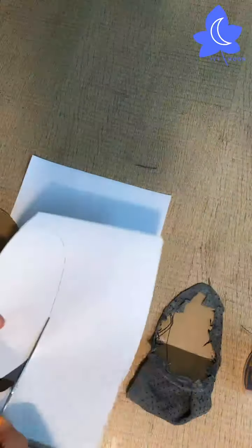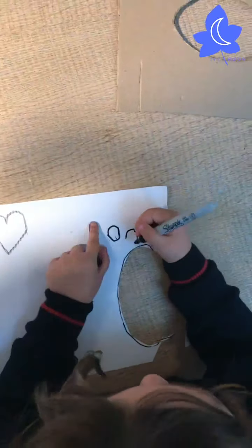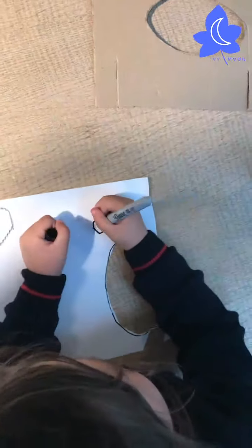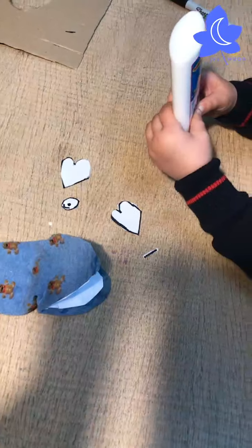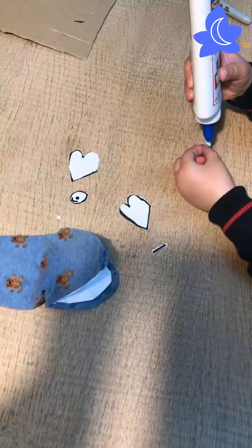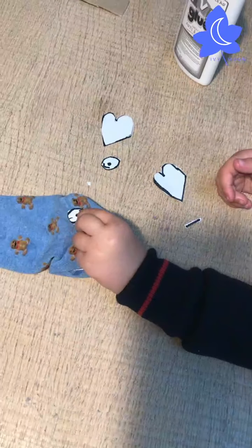Once you've stuck that in place you're going to use a piece of paper to cover up the inside of the mouth. You can use your template that you used before to draw the same size shape outline of your hand, cut around it, and stick that onto the inside of your sock puppet's mouth.